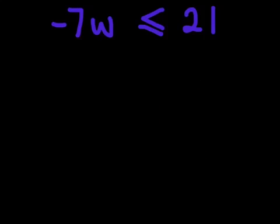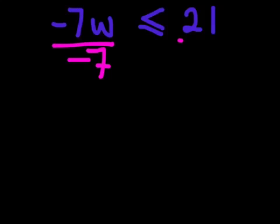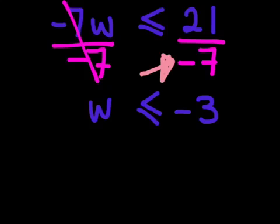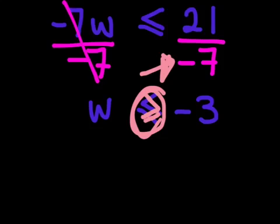Let's look at another one. If I have −7w ≤ 21 and I want to get w by itself, I divide both sides by −7 — that cancels it out. But because I divided by a negative number, the sign gets flipped: it's no longer less than or equal to, but actually becomes greater than or equal to.